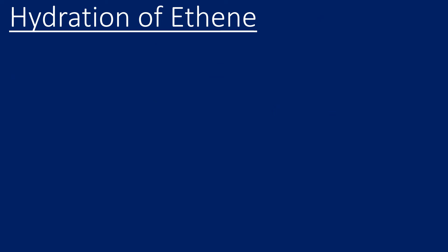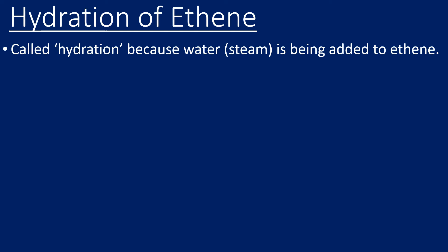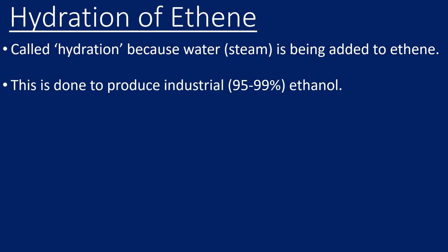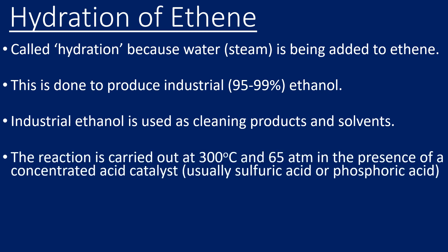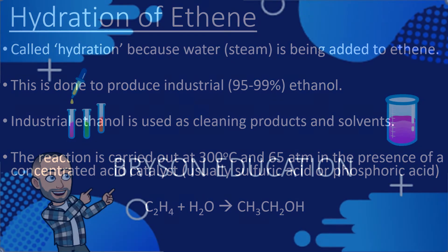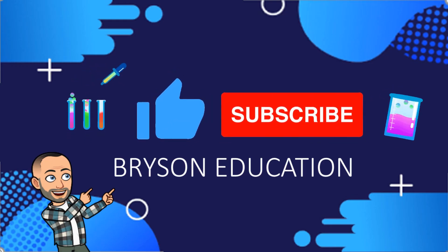Moving on to the next commercial reaction of alkenes: the hydration of ethene. It's called hydration because water is being added to ethene. It's actually steam because it's carried out at high temperature, and this produces industrial ethanol — a very high percentage ethanol, not the same as the ethanol from fermentation that we would drink. It's used primarily as cleaning products and solvents in industry. The conditions are 300°C and 65 atmospheres, with a concentrated acid catalyst — usually sulfuric or phosphoric acid. The reaction: ethene plus water gives ethanol.